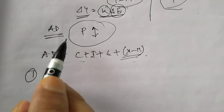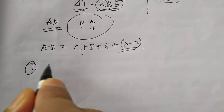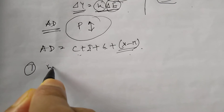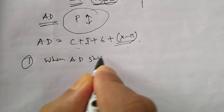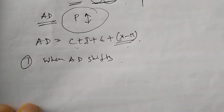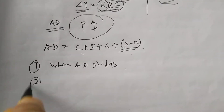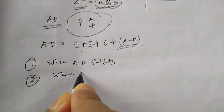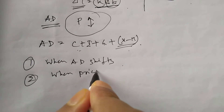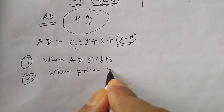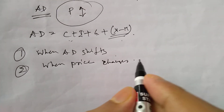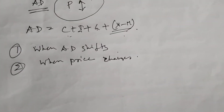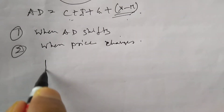Under the aggregate demand curve analysis of the multiplier, we will discuss two cases. The first case is when the AD curve shifts, and the second case is when price moves — that is, when there are changes along the AD curve.